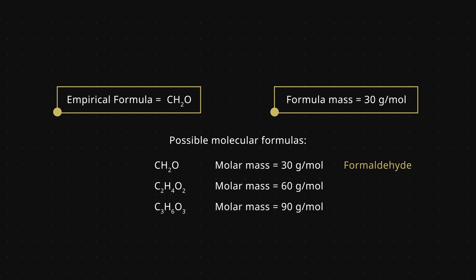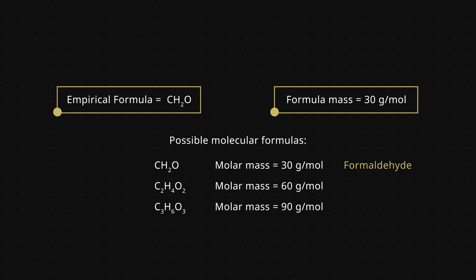When our second unknown is run through the mass spectrophotometer, we obtain a mass of 60 grams per mole. This is twice our formula mass. The molecular formula is then the empirical formula multiplied by 2. This indicates that the molecular formula is twice the empirical formula or C2H4O2. This corresponds to acetic acid.